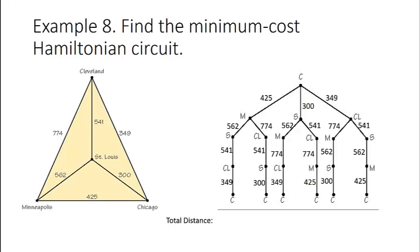Now we simply add all of those values to get the distance of each route. For example, our first route from Chicago to Minneapolis to St. Louis to Cleveland to Chicago. Adding all of those distances together we see that that total trip would be a distance of 1,877 miles.